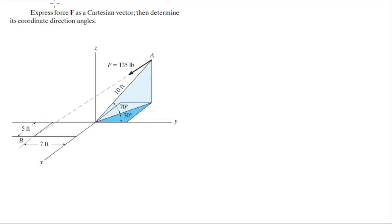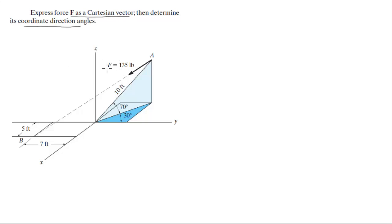For more videos visit ForTheSakeOfEducation.com. Alright guys, we're going to do this problem where they want you to express F as a Cartesian vector and determine its coordinate direction angles. The way this problem is done is backwards of the instruction — first you've got to find the coordinate direction angles, and then you can easily find F as a Cartesian vector since you have the magnitude.